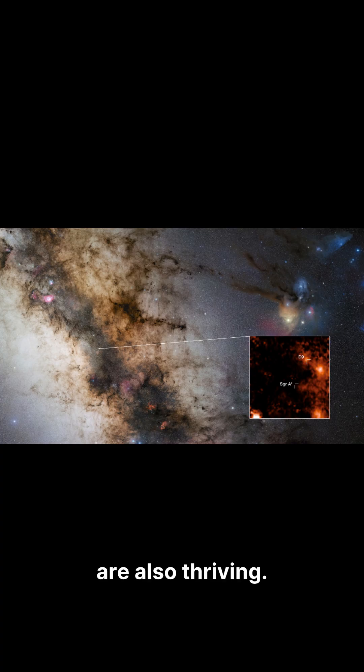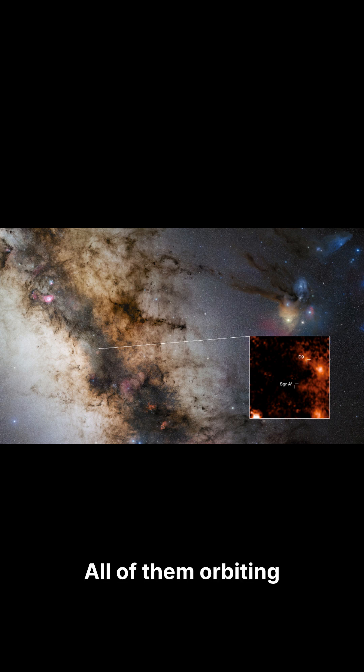Objects X3 and X7 are also thriving, all of them orbiting Sagittarius A star in stable paths, defying every prediction.